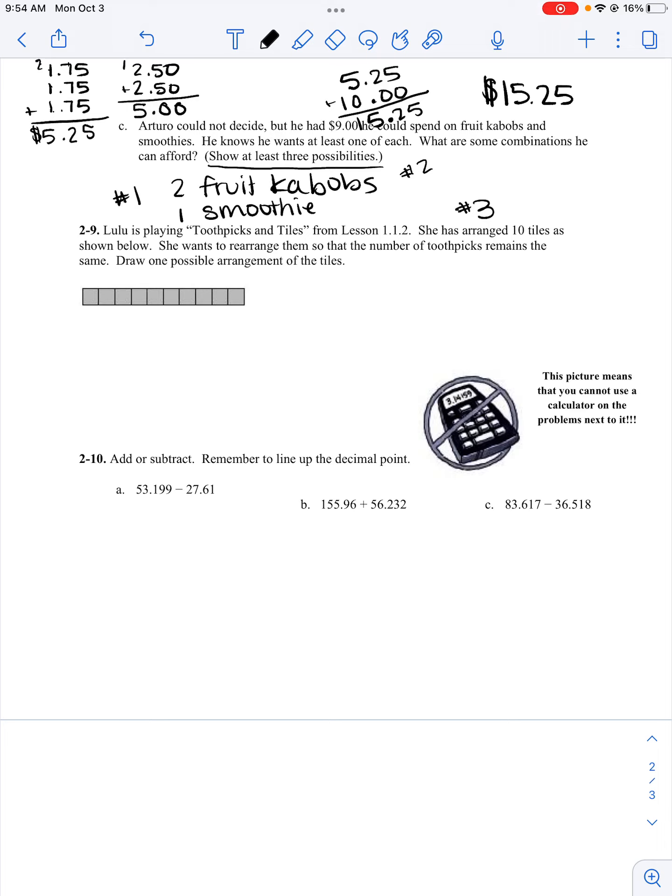For problem 2.9, Lulu is playing the toothpicks and tiles from lesson 1.1.2. She arranged 10 tiles and she wants to rearrange them so that the number of toothpicks remains the same. We need to draw one possible arrangement of the tiles. So we have to figure out the number of toothpicks. So 1, 2, 3, 4, 5, 6, 7, 8, 9, 10, 11, 12, 13, 14, 15, 16, 17, 18, 19, 20, 21, 22. So I need to rearrange them.